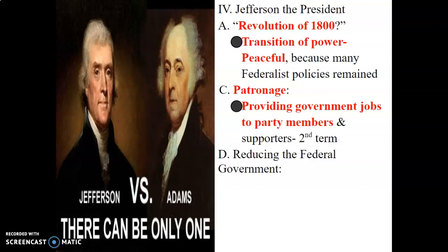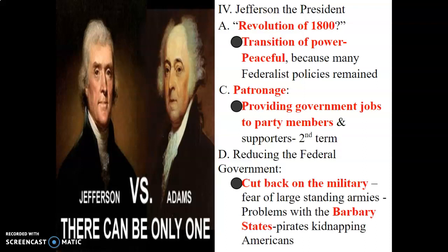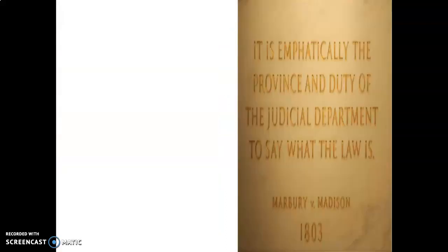Democratic-Republicans wanted to reduce the size of the federal government — we'll see how that's a little hypocritical based on Jefferson's actions. They wanted to cut back on the military and feared a large standing army. They didn't want a big government or big army because that could seem problematic in the future. The problem with that was the Barbary States, which were basically pirates who kidnapped Americans and caused a big problem for the Jefferson administration — they would capture Americans at sea and demand ransom to get them back.